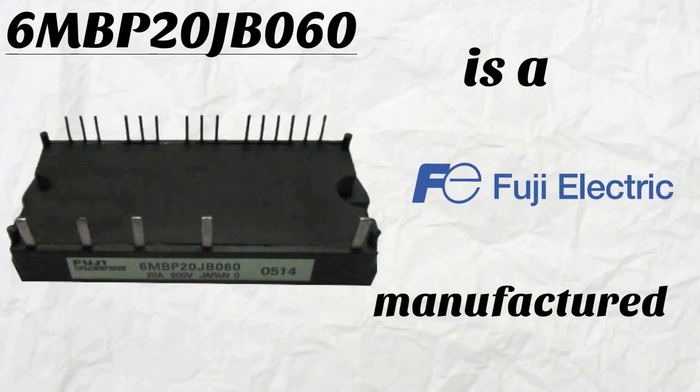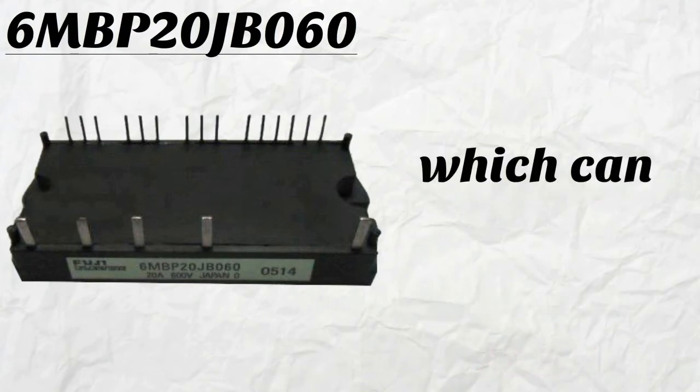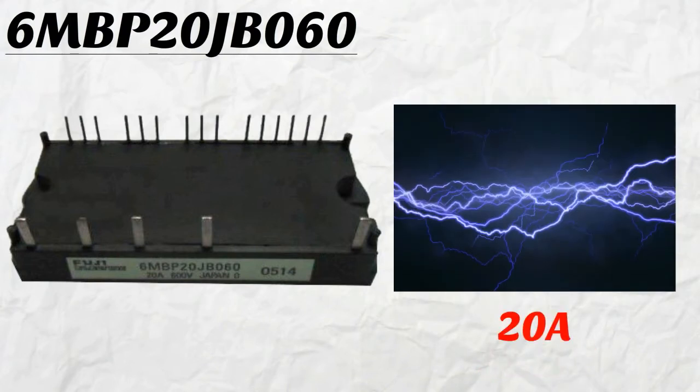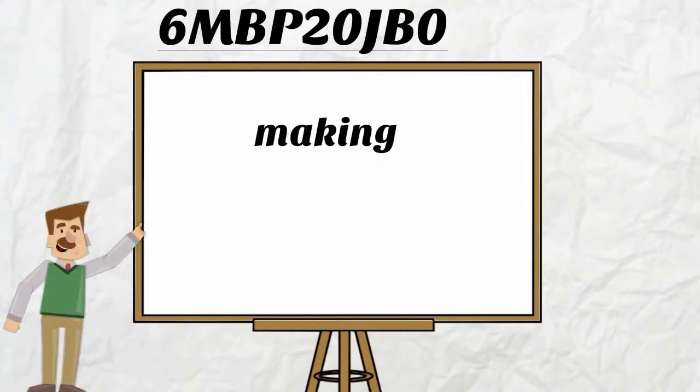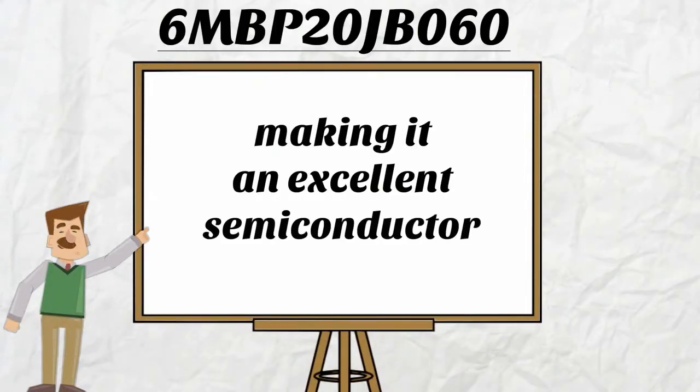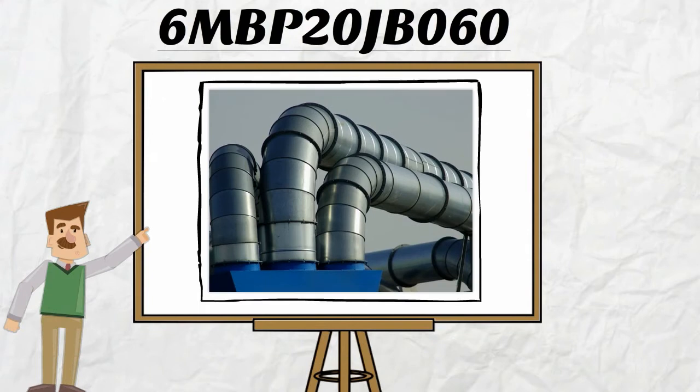6MBP20JB060 is a Fuji manufactured IGBT which can provide energy of up to 20 amps and 600 volts, making it an excellent semiconductor to power up an industrial ventilator system.